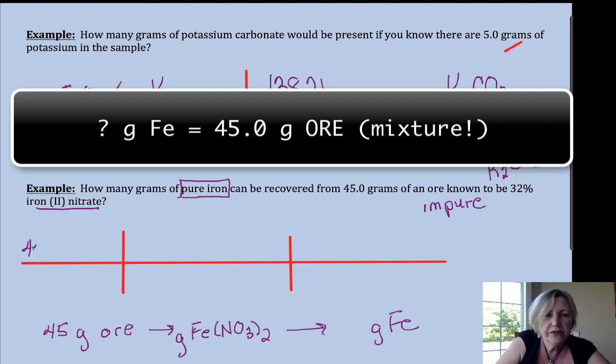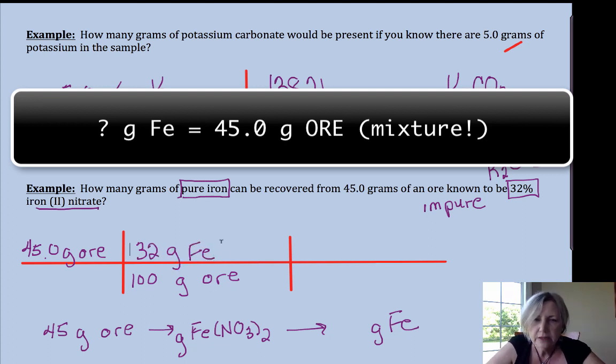So I have 45.0 grams of this ore. The question tells me 32 percent of it is iron(II) nitrate. What that means is for every 100 grams of ore I would have 32 grams of iron(II) nitrate.